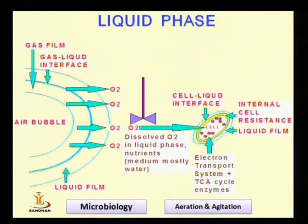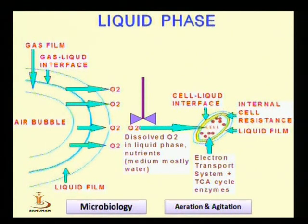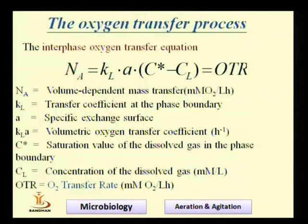After entering the bulk liquid phase, oxygen travels to the surface of the cell, where it enters the cell and is utilized for the metabolic activity of the organism. This is the path, and the main resistances are offered in the two films, in the bulk liquid phase, and in crossing the surface of the cell.